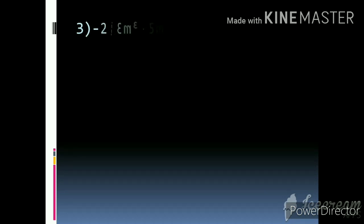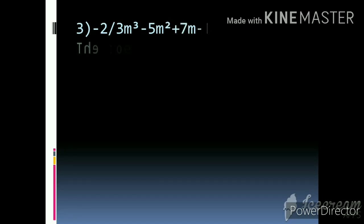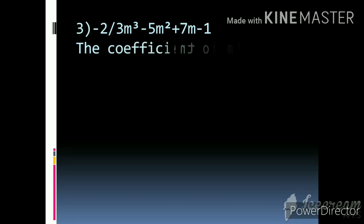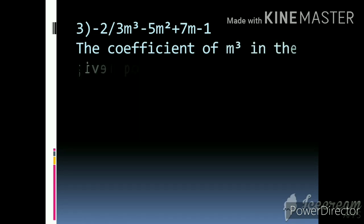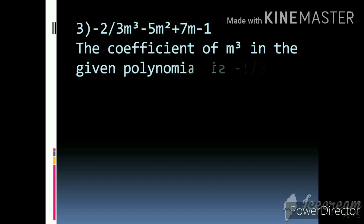Question 3: (-2/3)m³ - 5m² + 7m - 1. With m³, the coefficient is -2/3. Therefore the coefficient of m³ in the given polynomial is -2/3.